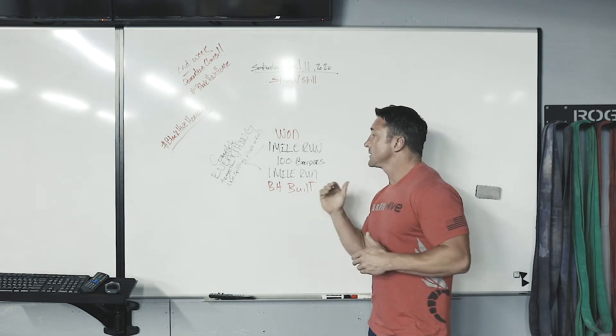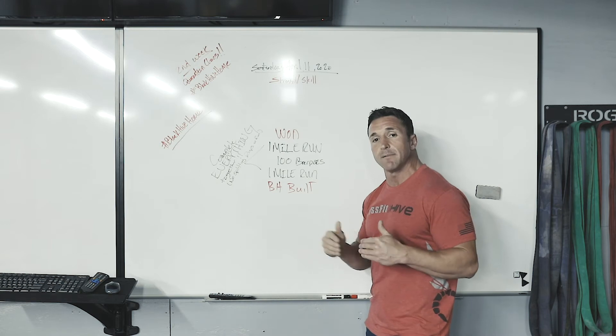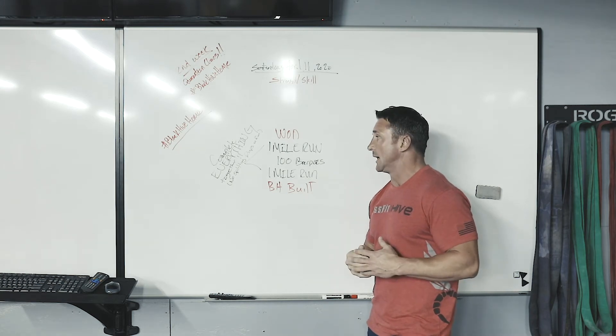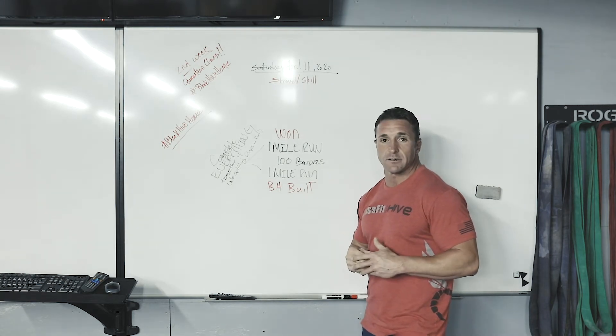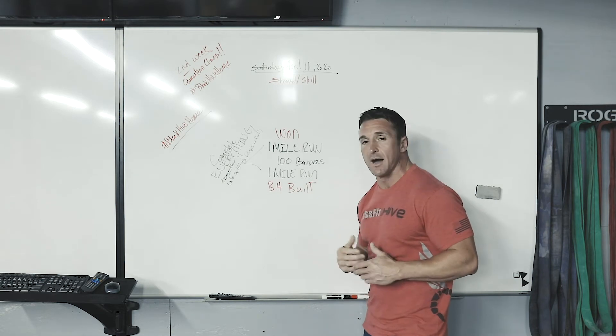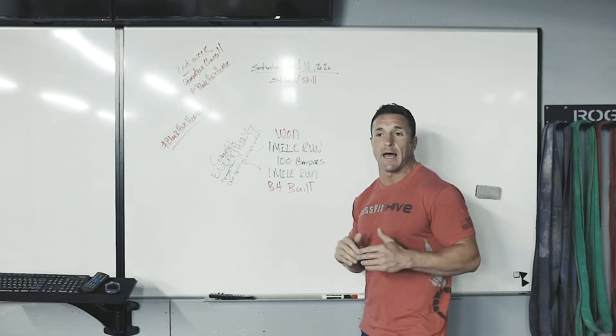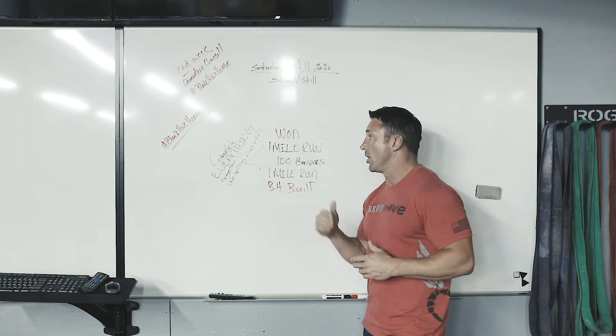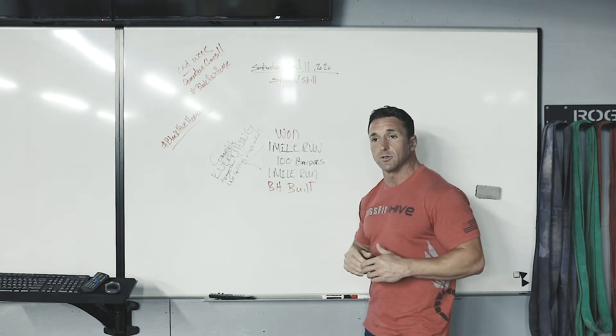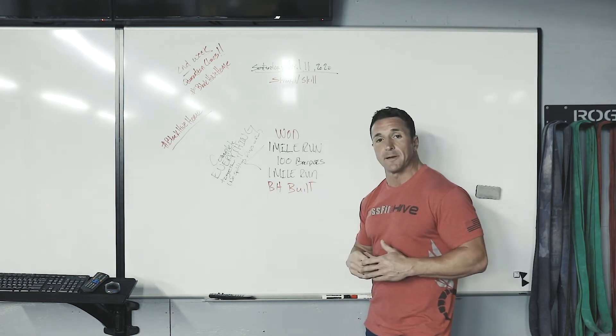mile run, let's just make sure we're staying in that time domain. Maybe we do 1200 meters, you know, three quarters of a mile, maybe we do a half mile, whatever feels good there. But let's just try to keep it right around that nine, ten minute mark on the mile, at the very most 11 minutes. 100 burpees,